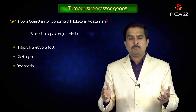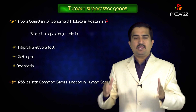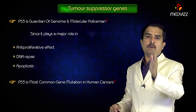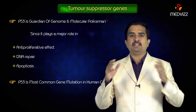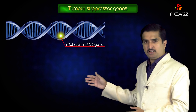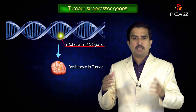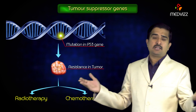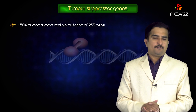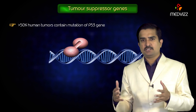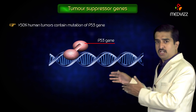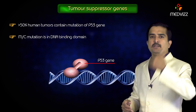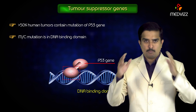Because of these features, p53 is the most commonly mutated gene identified in human cancers. Mutation in the p53 gene causes resistance in tumors mainly to radiation as well as chemotherapy, which is an absolutely bad effect. Approximately greater than 50% of human tumors contain mutations of this gene, where the most common mutation is in the DNA binding domain.